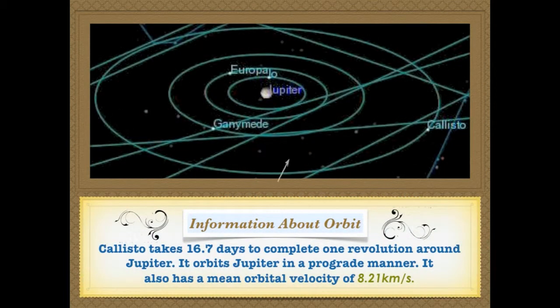This photograph shows Callisto's plane of orbit around Jupiter. In case you find it hard to see, I have made an arrow that points to where Callisto is in the picture. Callisto takes 16.7 days to complete one revolution around Jupiter, and 16.68 days to complete one rotation around its axis, so it takes roughly the same amount of time to complete both a revolution and a rotation.